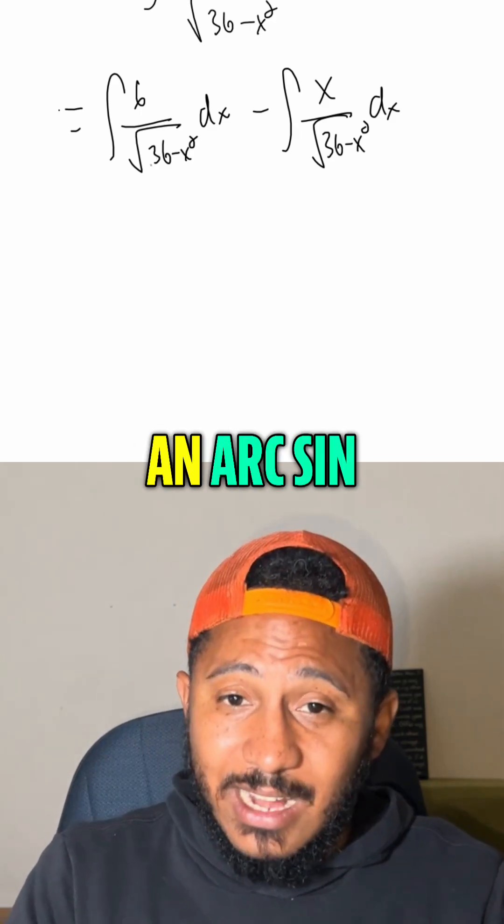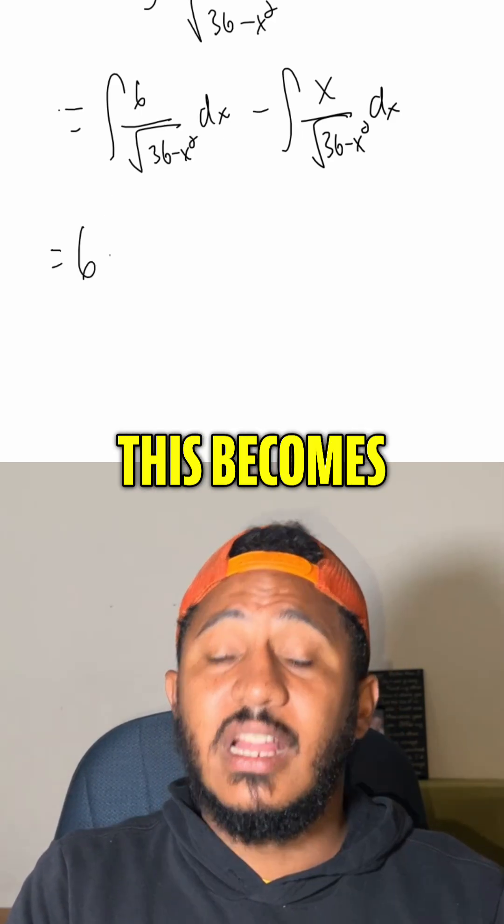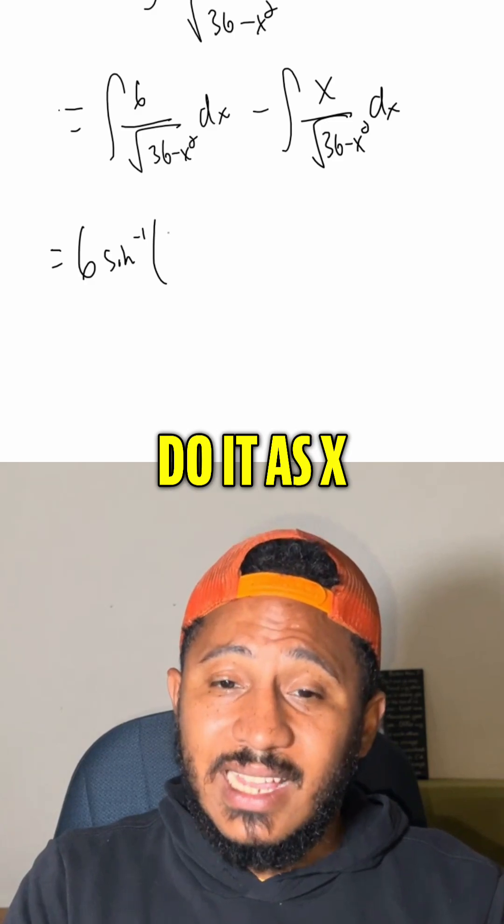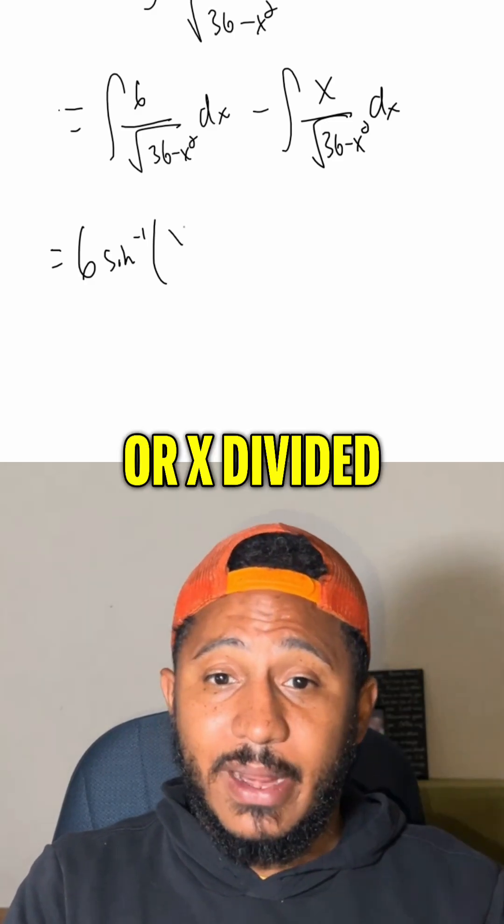Well, the first one here is just an arc sine. So that 6 is out in front. It becomes the sine inverse of, and then we know it's x divided by our A, or x divided by 6.